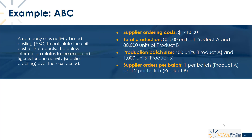We have to place supplier orders every time we make a batch, because we need to order our materials. We place one supplier order for every batch of product A — maybe it only uses one type of material. But product B is more complex in terms of materials or components, so we place two supplier orders per batch of product B.